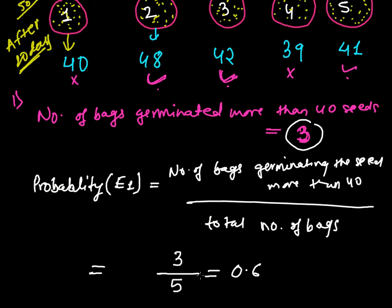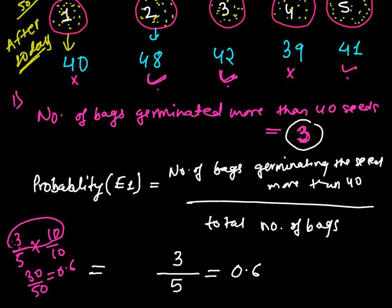If you want to convert 3/5 to a decimal, multiply both numerator and denominator by 10 to get 30/50, which equals 0.6. And if you want to convert it to a percentage, multiply by 100% to get 60%. That means there is a 60% chance of germinating more than 40 seeds in these bags.